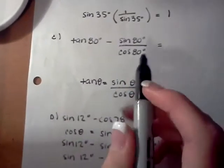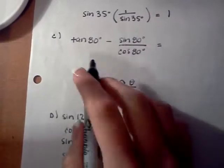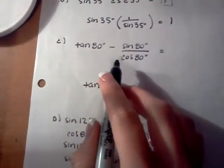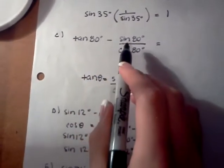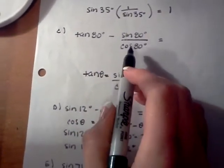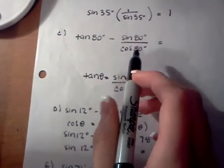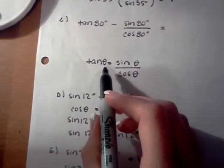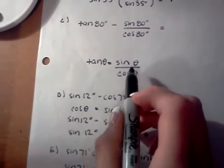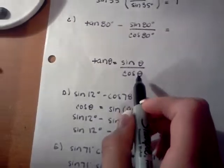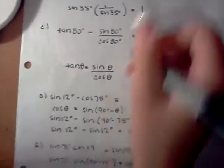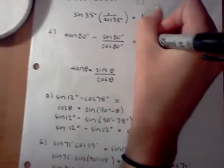For the third one, tangent of 80 degrees minus sine of 80 over cosine of 80, we'll use the identity tangent theta equals sine of theta over cosine of theta, which gives 0.